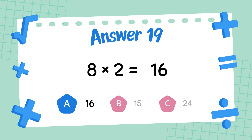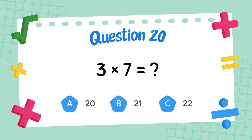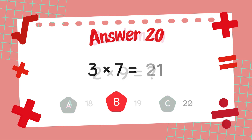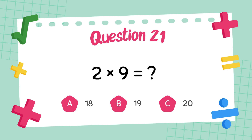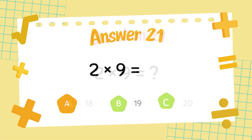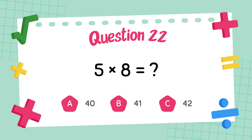The answer is 16. What is 3 times 7? The answer is 21. What is 2 times 9? The answer is 18.